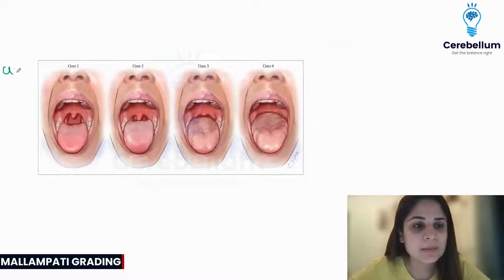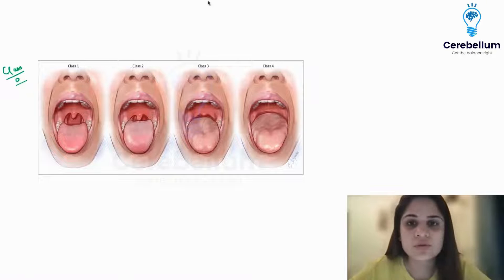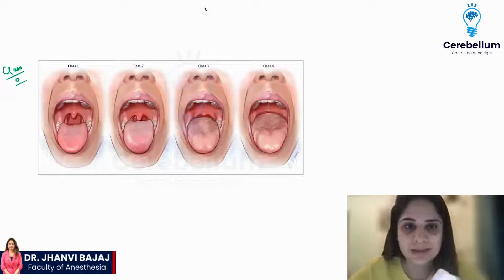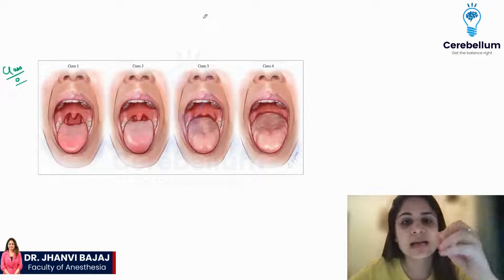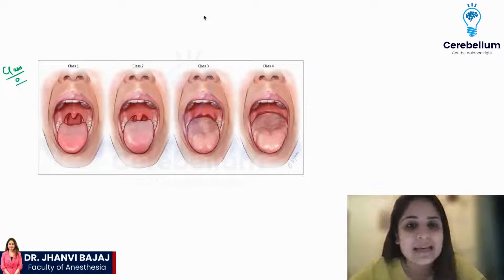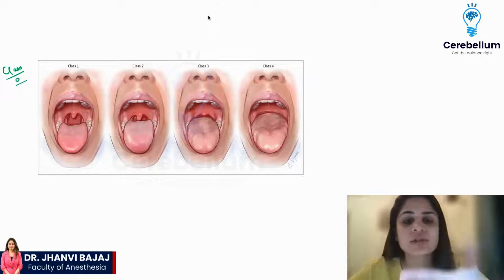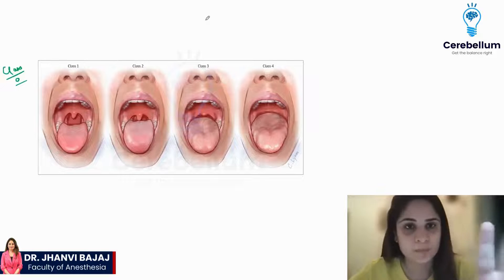Mallampati classification is used for airway examination — specifically to identify an anticipated difficult airway. You are looking at the oral structures to be able to anticipate a difficult airway. When we talk about difficult airway, it means it could be difficult mask ventilation, difficult intubation, or it could be difficult front of neck access.